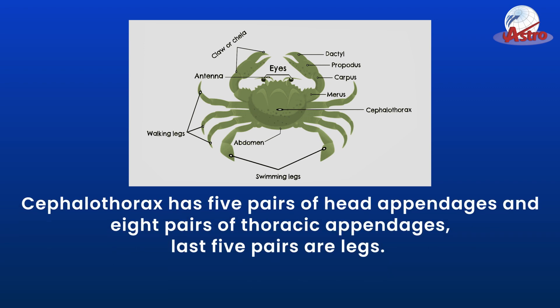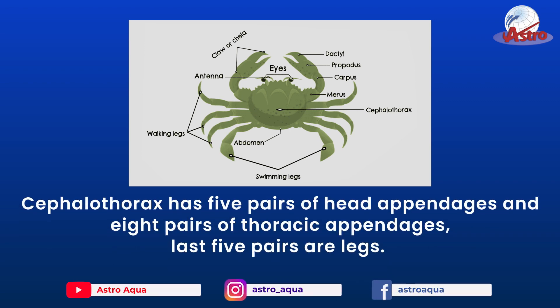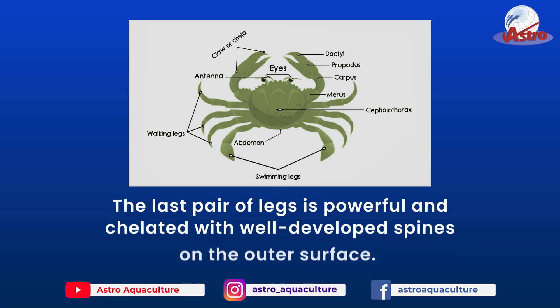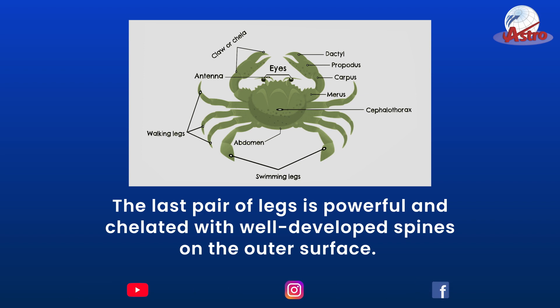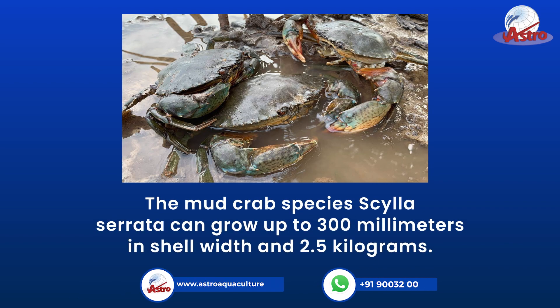The cephalothorax has five pairs of head appendages and eight pairs of thoracic appendages, with the last five pairs being legs. The last pair of legs is powerful and chelate with well-developed spines on the outer surface. The mud crab species Cilla sarata can grow up to 300 mm in shell width and 2.5 kg.